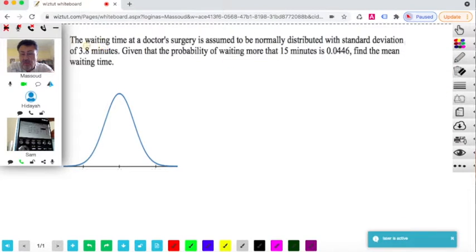In this question, the waiting time at a doctor's surgery is assumed to be normally distributed with a standard deviation of 3.8. They have given us the probability of a time, the waiting time that is more than 15 minutes, to be 0.0446.